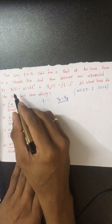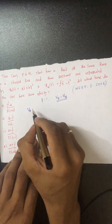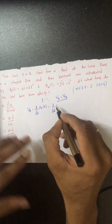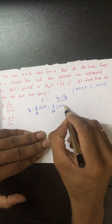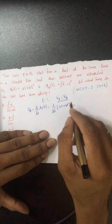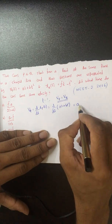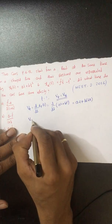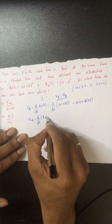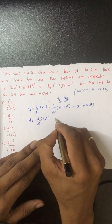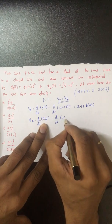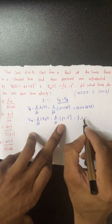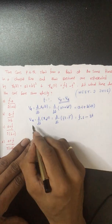Displacement of P and Q are given. Velocity of P is d/dt of xP(t), which equals d/dt of (at plus bt squared) — giving vP equals a plus 2bt. Similarly, velocity of Q is d/dt of xQ(t), which equals d/dt of (ft minus t squared) — giving vQ equals f minus 2t.